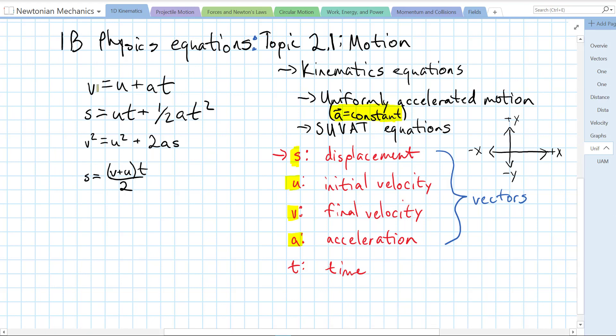Here are our four kinematics equations that are used in IB physics. V equals U plus AT. Final velocity is initial velocity plus acceleration times time.